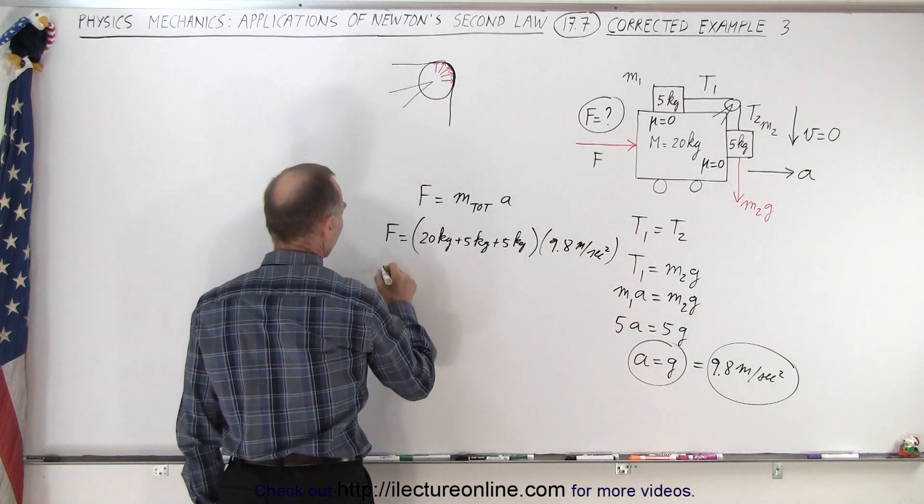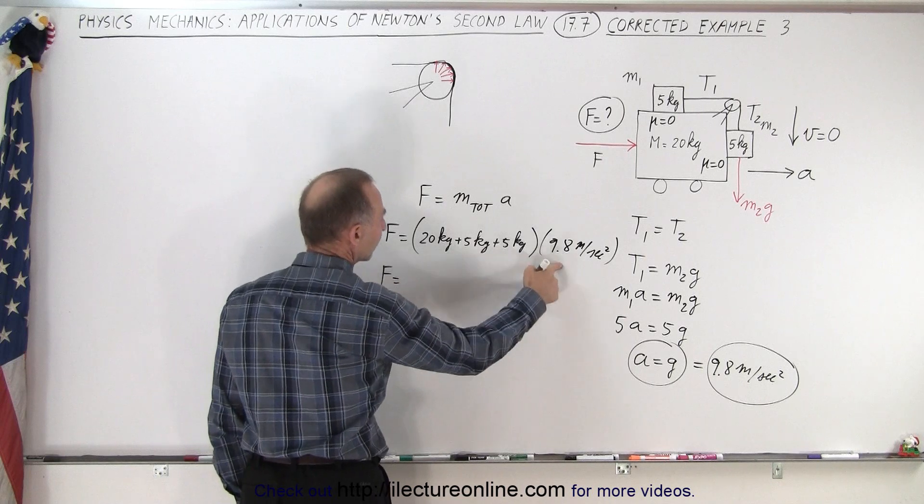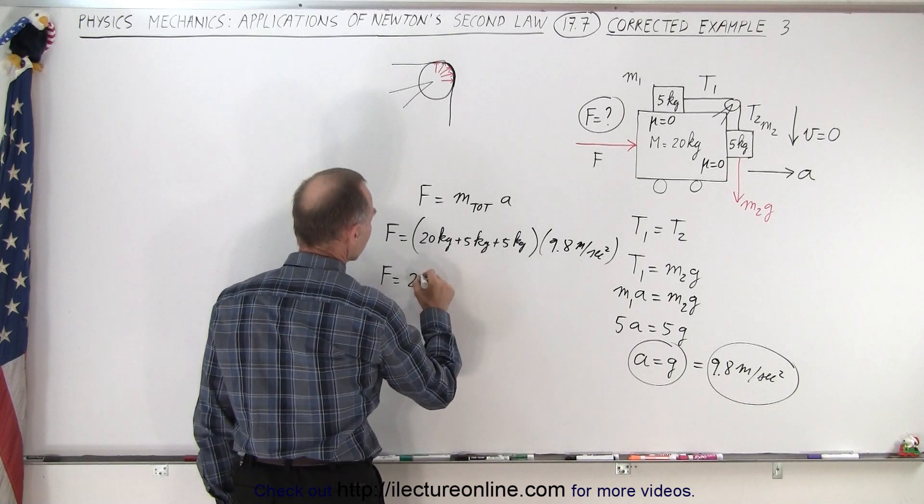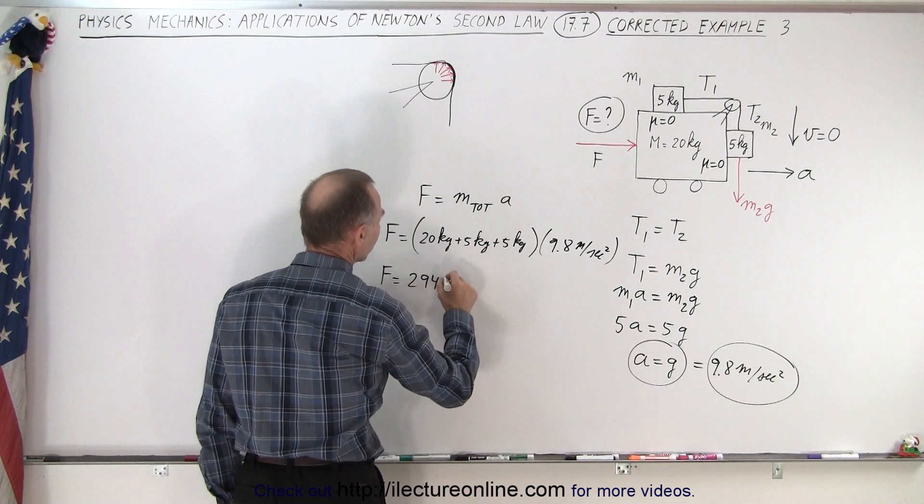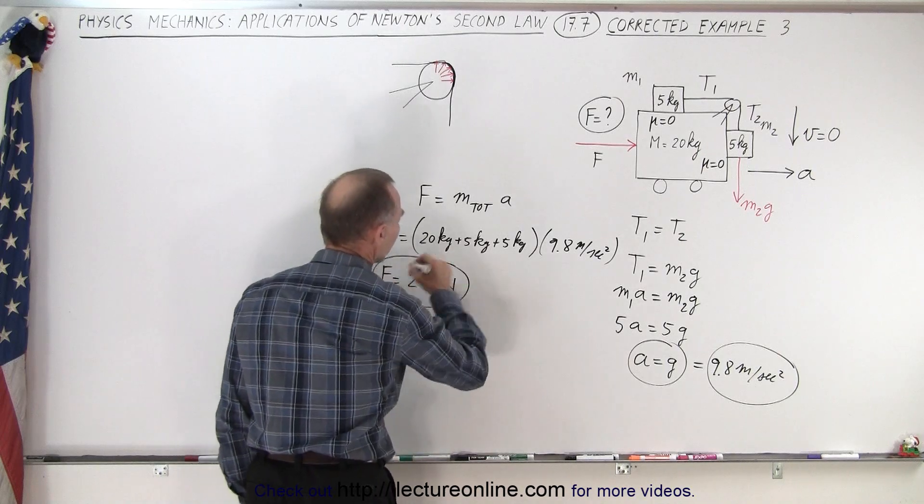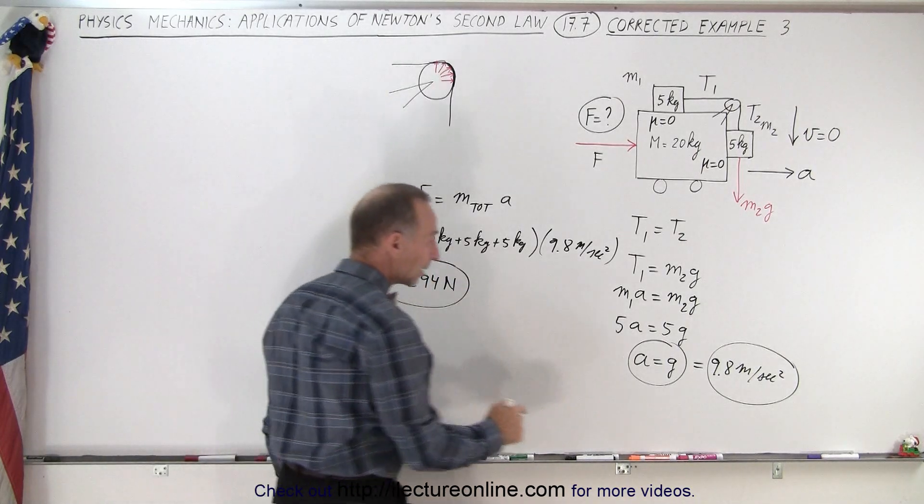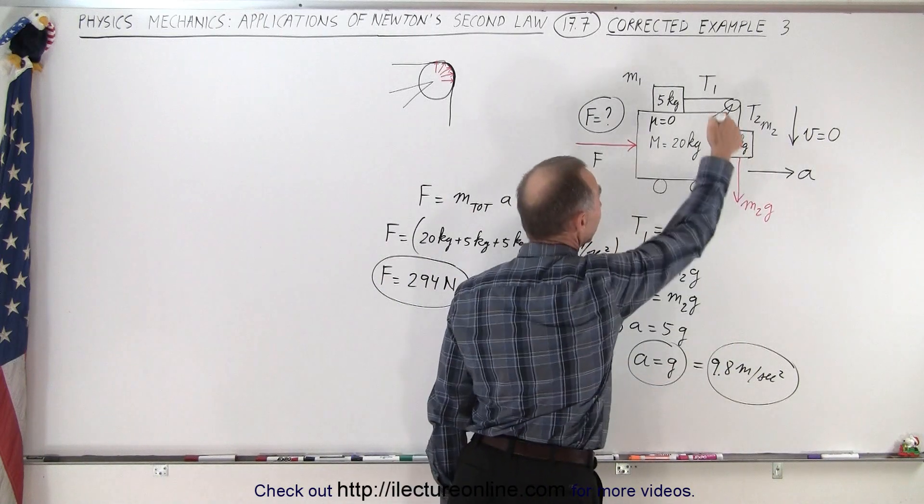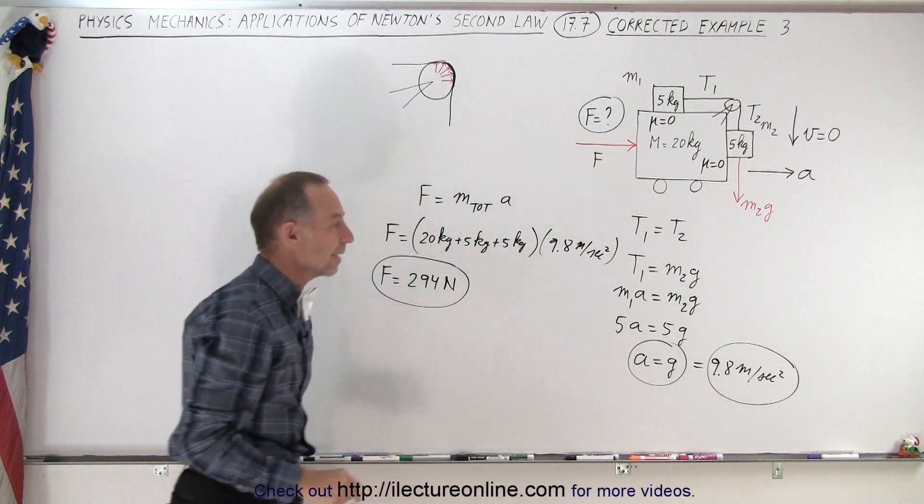And so therefore we have F is equal to, that's 30 times that, that would be 294 newtons required to accelerate the whole system at 9.8 meters per second squared to keep this from coming down.